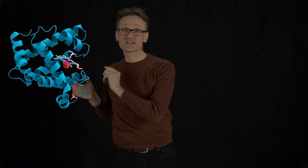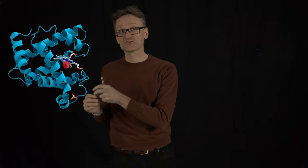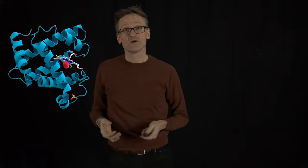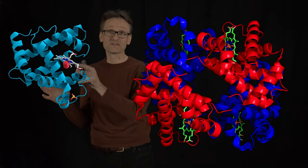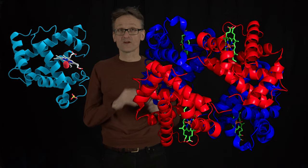Myoglobin is the single domain that binds oxygen in our muscle tissue, while hemoglobin is the related protein that consists of four roughly similar subunits that bind oxygen in our blood.